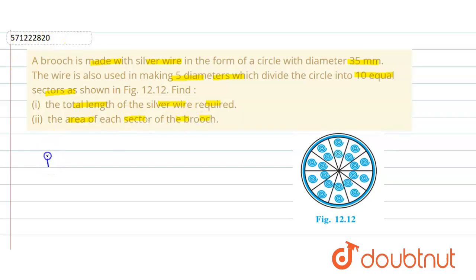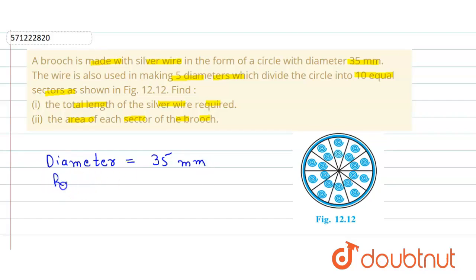It is given that the diameter is equal to 35 millimeters. So the radius will be equal to half of the diameter, which is 35 divided by 2 millimeters.